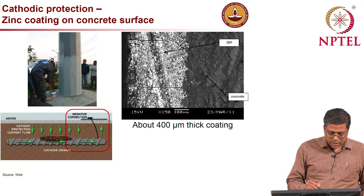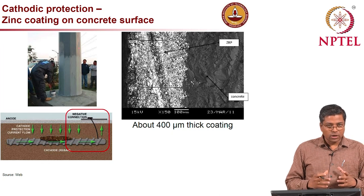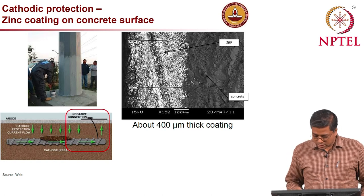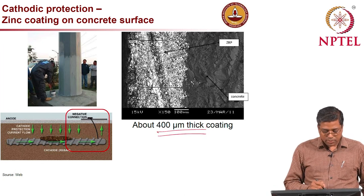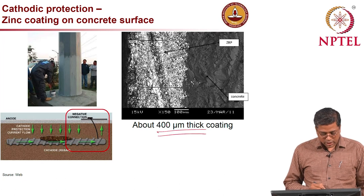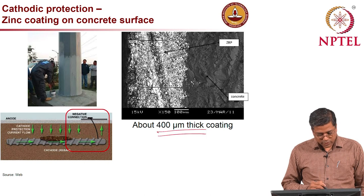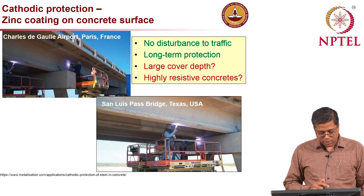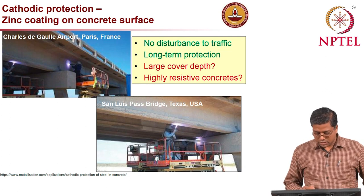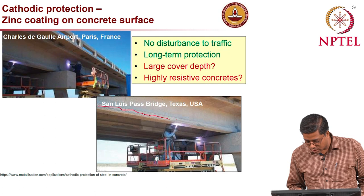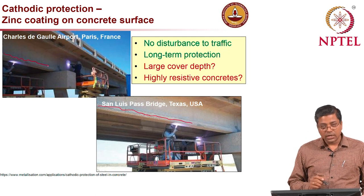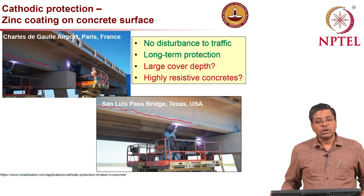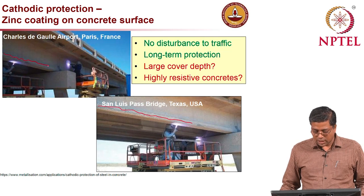An example is a bridge column where the zinc coating was about 400 microns thick, applied where cover concrete was relatively thin and porous. Other examples include a bridge in Paris and one in Texas, both showing significant cracking on girders — corrosion was arrested by applying zinc coating electrically connected to the internal steel reinforcement.